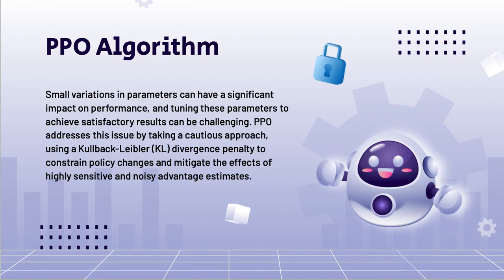Tuning these parameters to achieve satisfactory results can be challenging. PPO addresses this issue by taking a cautious approach using a Kullback-Leibler divergence penalty to constrain policy changes and mitigate the effects of highly sensitive and noisy advantage estimates. Additionally, PPO employs an importance sampling strategy and uses asynchronous policies for training and sampling data to enhance sampling efficiency.